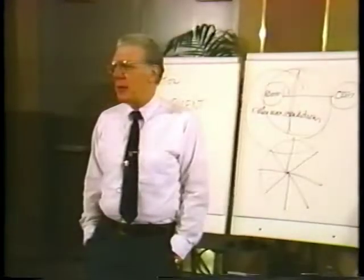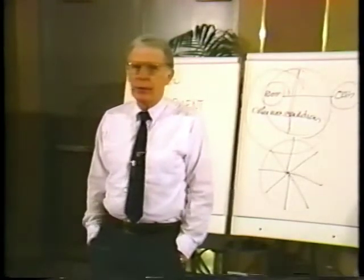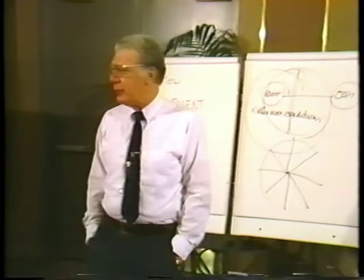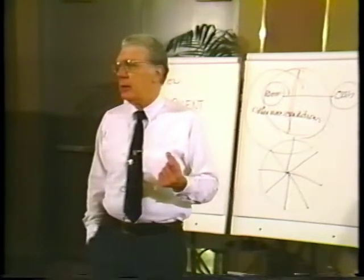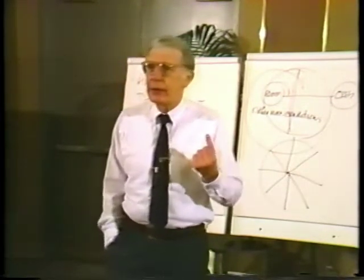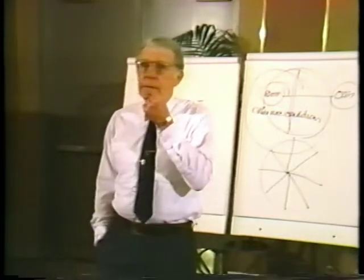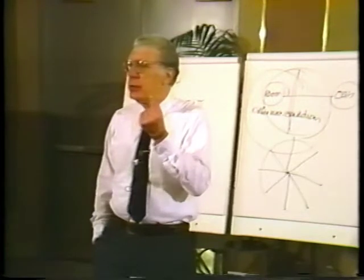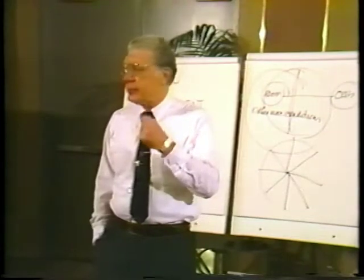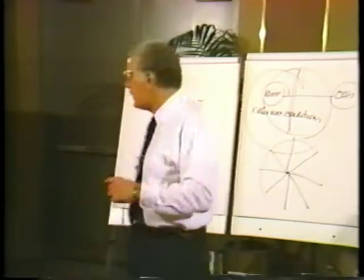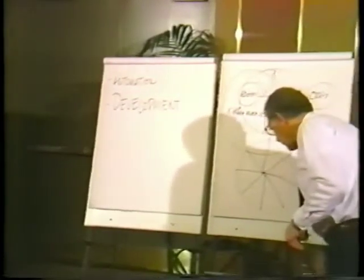When we began to use electricity as a source of power, some problems arose because you couldn't see it. You didn't know how much of it was going through a wire, how much was being put out by a generator, what resistance it was meeting, or what pressure it was moving under. Although you couldn't see it, you could feel it — but that turned out to be a very dangerous way of determining how much there was. So we developed devices — ohmmeters, ammeters, voltmeters — a new technology we called instrumentation.